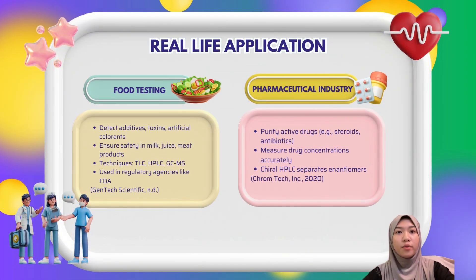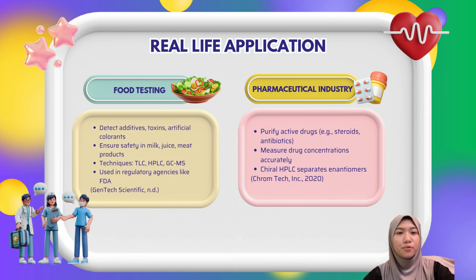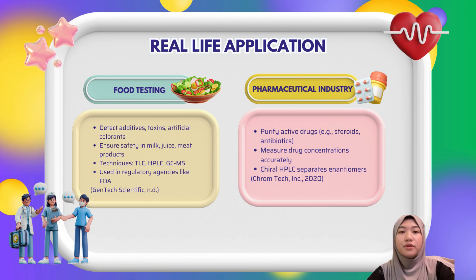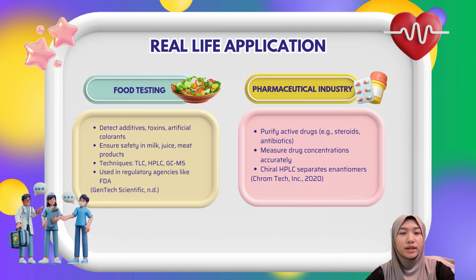Now that we understand what chromatography is, let's take a closer look at how it's used in real life — from the food we eat to the medicine we take and even the fuel that powers our cars. Chromatography plays a vital role in making our modern world safer and more efficient. The first application is food testing. In the food industry, chromatography plays a huge role in making sure what we eat is safe.